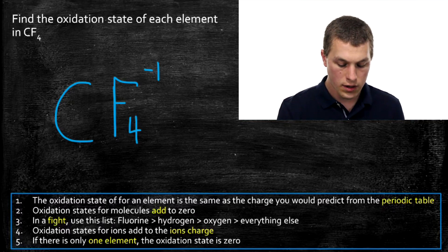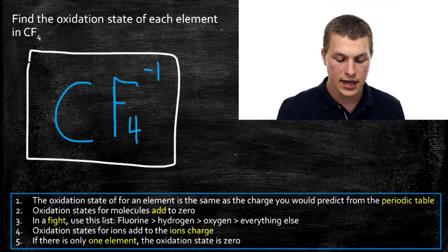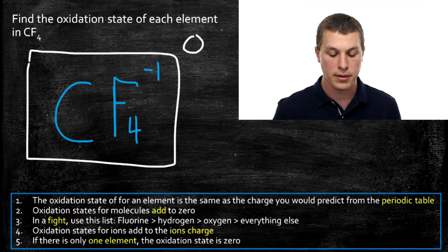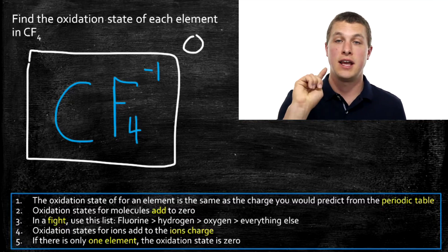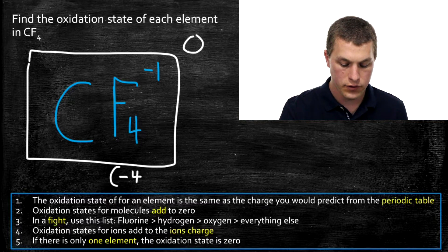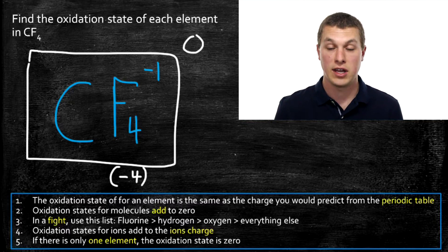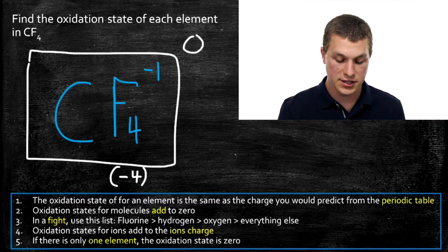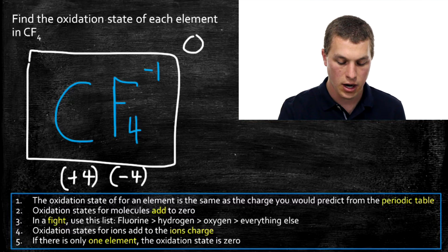We know from rule two that when I add up the oxidation state of everything in that compound, it has to add up to zero because that's a neutral molecule. I have four fluorines, each at negative one. Four times negative one gives me a total of negative four. Which means carbon has to be positive so it can add up to zero. It has to have a positive oxidation state of four, plus four. There's just one carbon, and that means the oxidation state on my carbon is plus four.